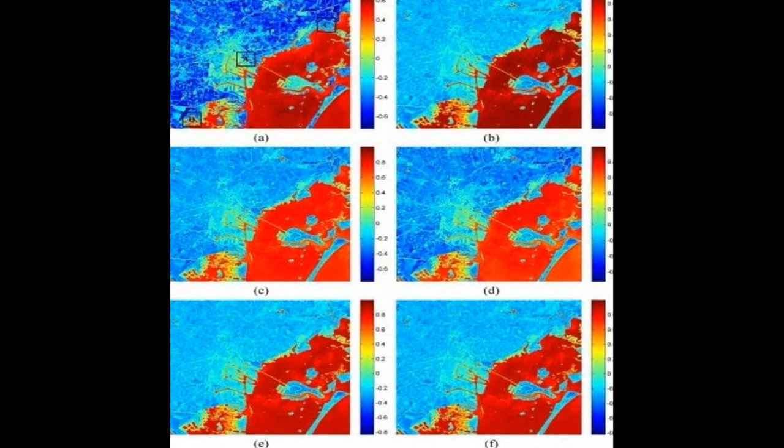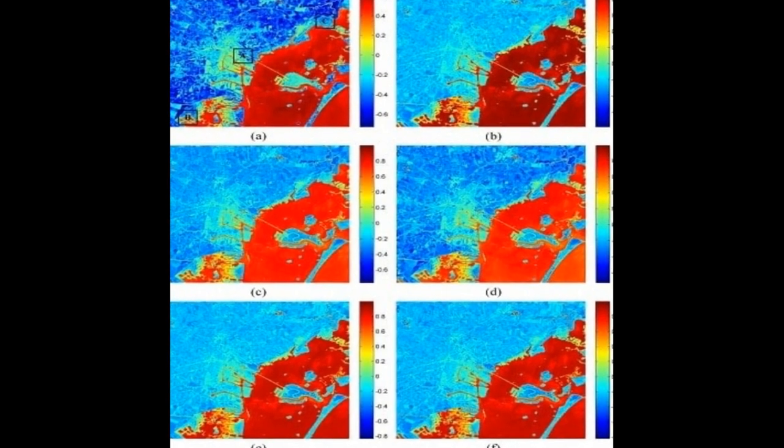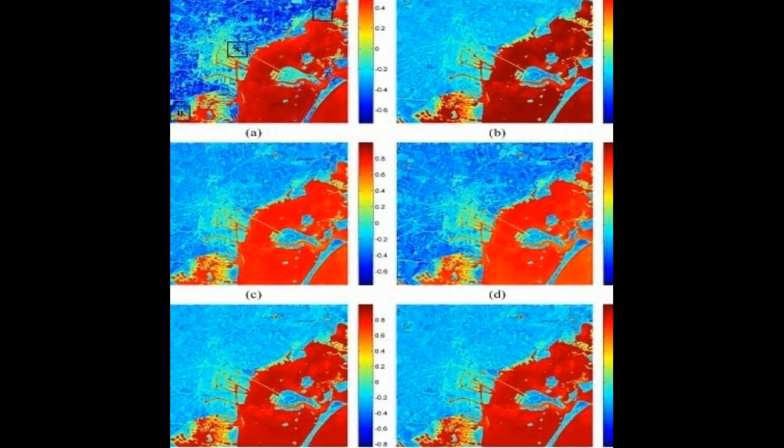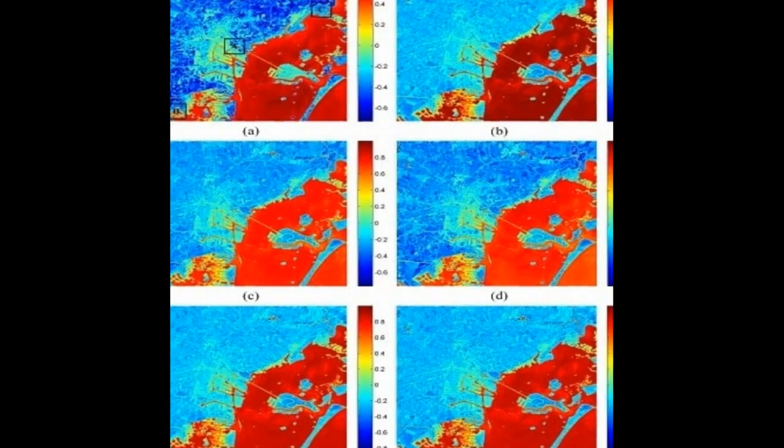The paper presents a novel method for producing a 10M Spatial Resolution Modified Normalized Difference Water Index (MNDWI) from Sentinel-2 satellite images using pan-sharpening algorithms.